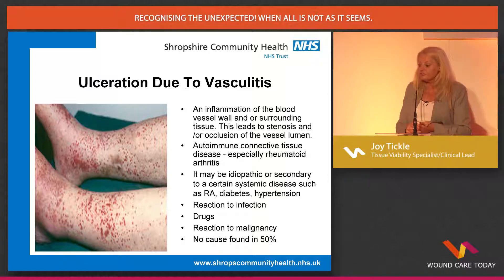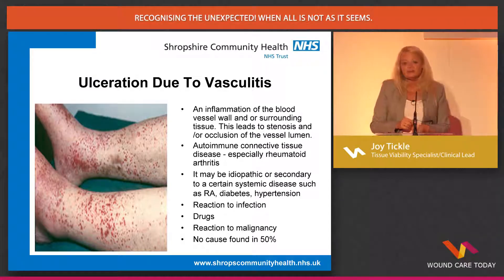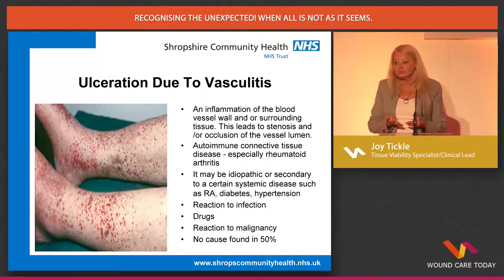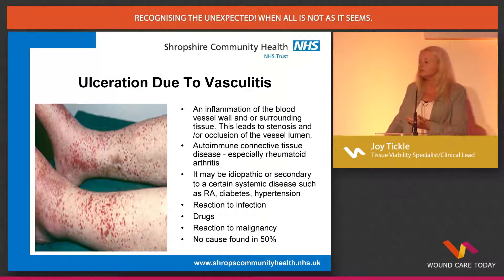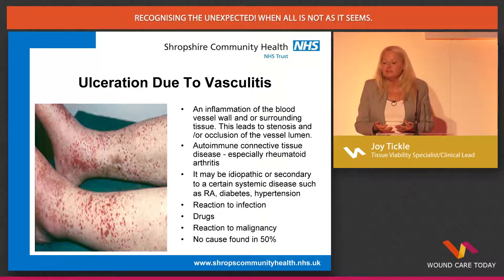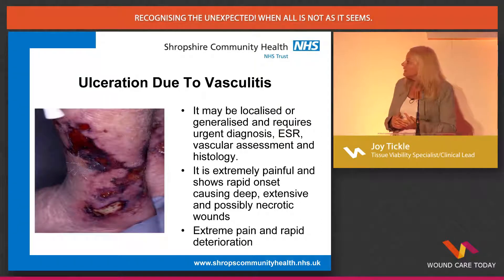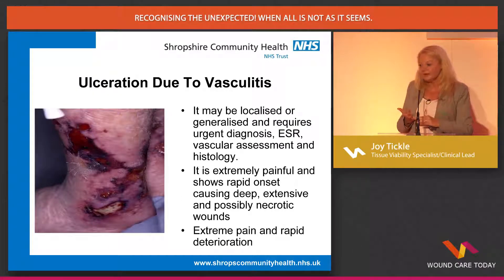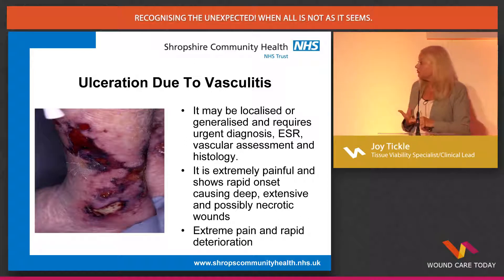It can also be an adverse reaction to drugs — I had a recent gentleman who was commenced on a new hypertensive drug and had a systemic reaction resulting in vasculitis. It could be linked to other underlying malignancies. But in 50% of some cases it's idiopathic — we don't know why it occurred. Despite all the tests for rheumatoid arthritis and various conditions, we don't know why. It can be very localised or generalised.